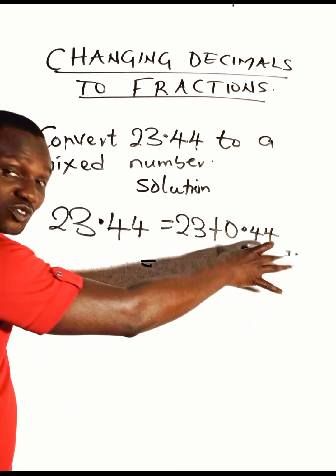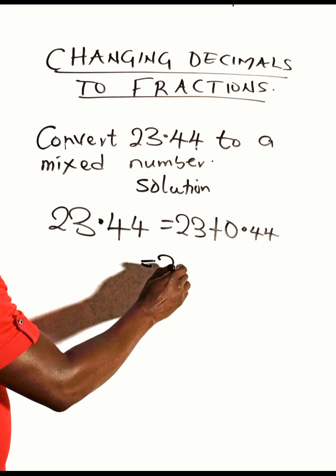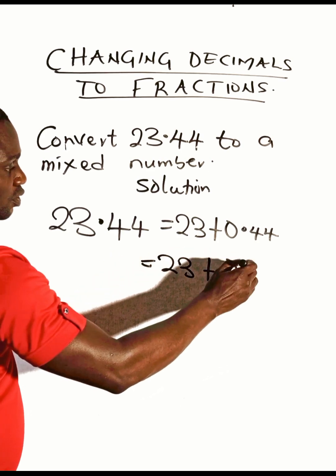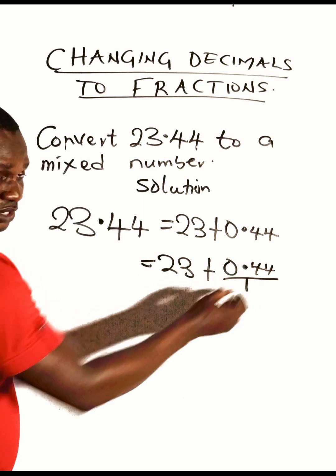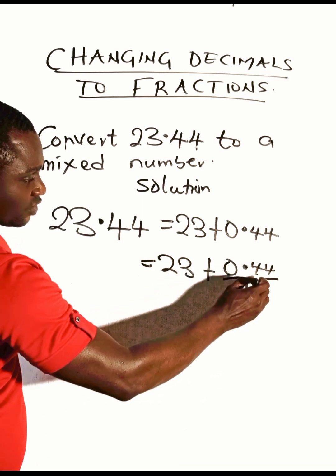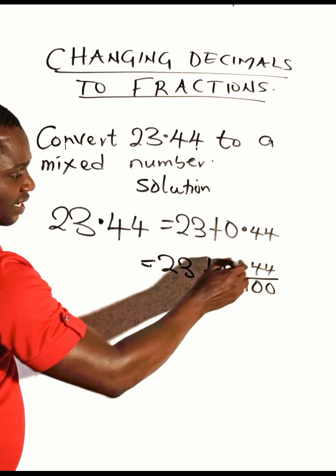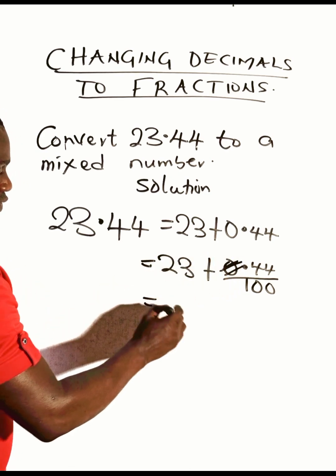So we write 23 here, then 0.44, rule a line. Write one under the point, then write two zeros under these digits. Cancel this out, so we have...